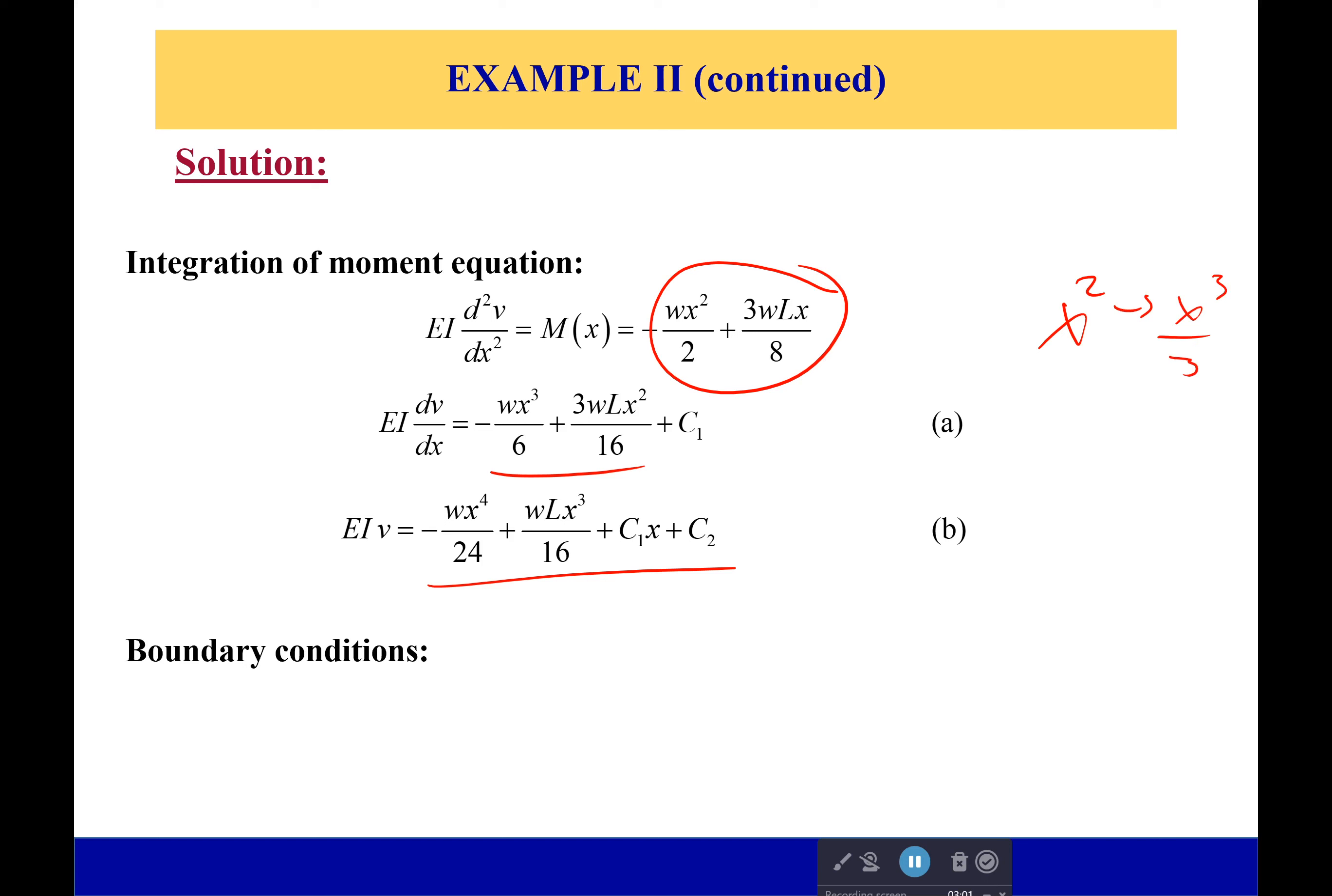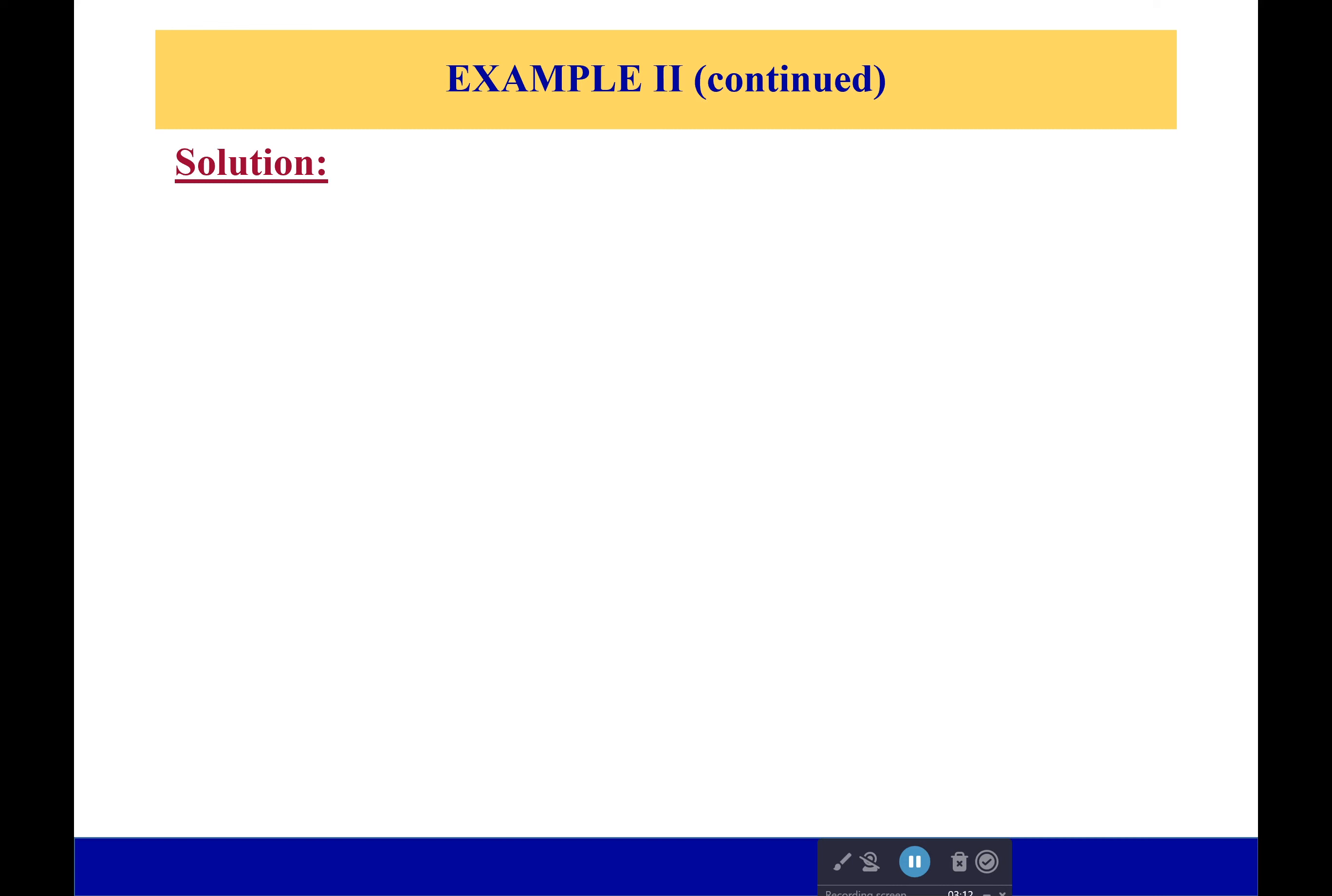Now I've got two boundary conditions. However, we already have one of those answers. We know that at x equals zero, the deflection has to be equal to zero, which is fantastic. So plug it in there and we get that C2 is equal to zero. Perfect.